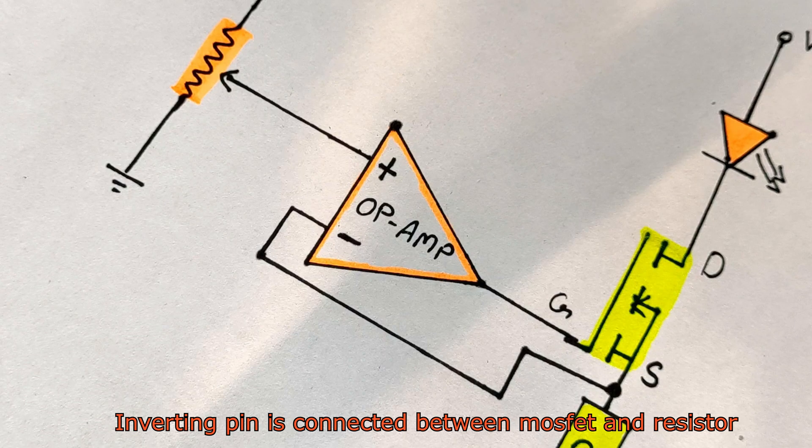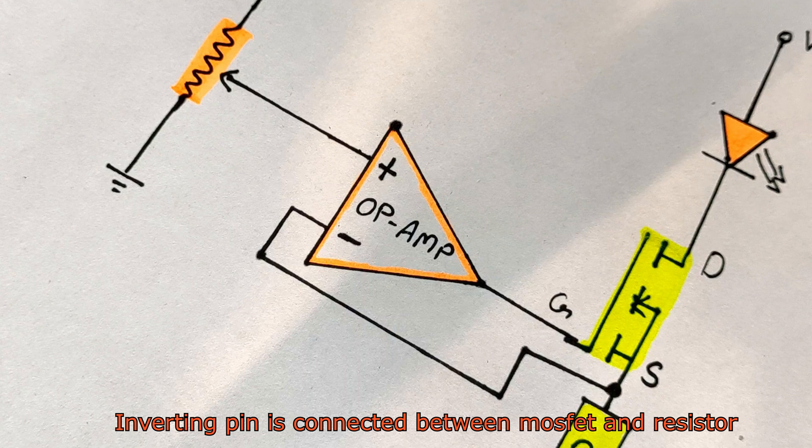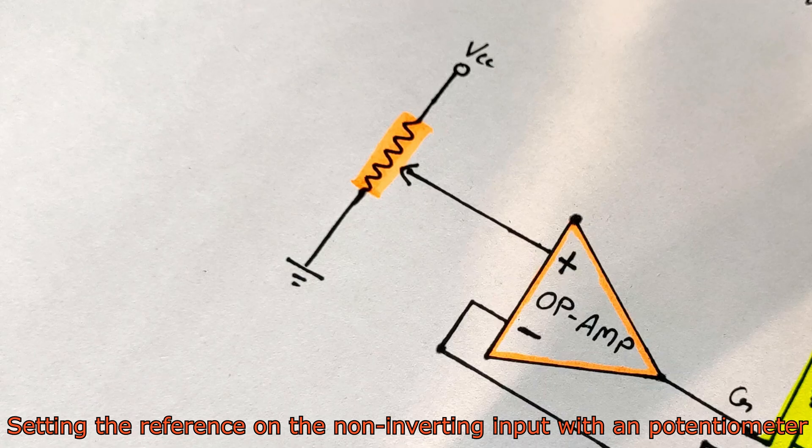Then we use an op-amp whose inverting pin is connected between the source terminal of the MOSFET and resistor. The non-inverting terminal is used to set the current value so we can connect a potentiometer, or we can also use a microcontroller to set the current digitally via PWM and a filter circuit.